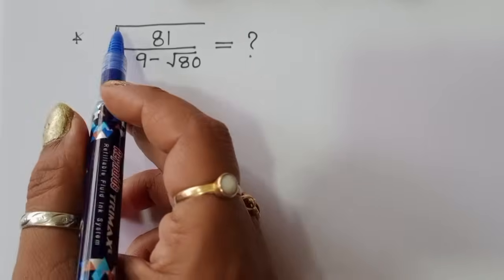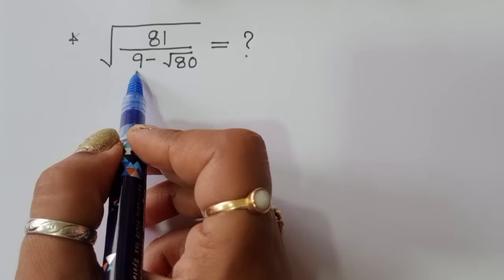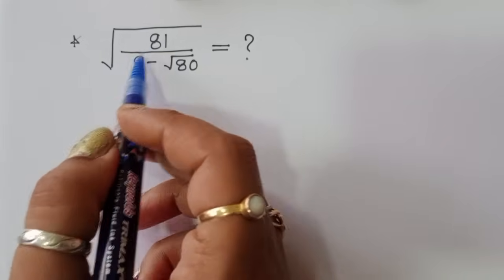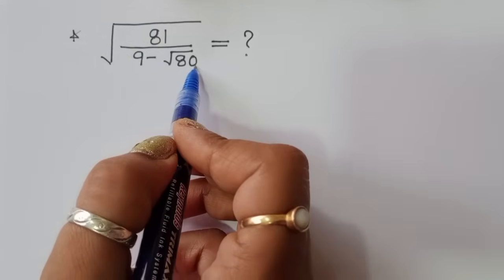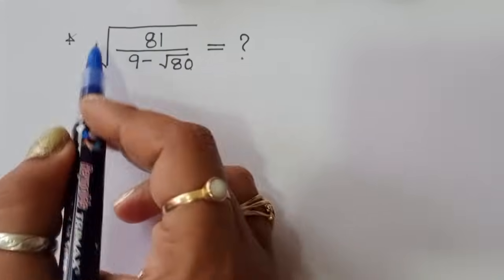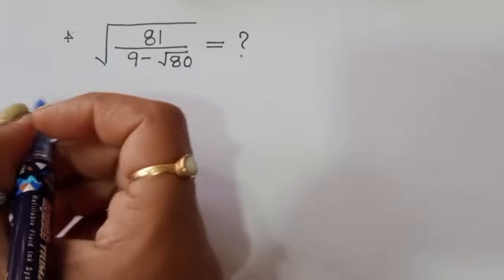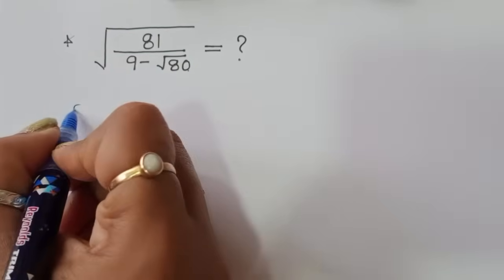The question is: given square root of 81 divided by 9 minus square root of 80, we have to find out the value of this equation. Let's see the solution.